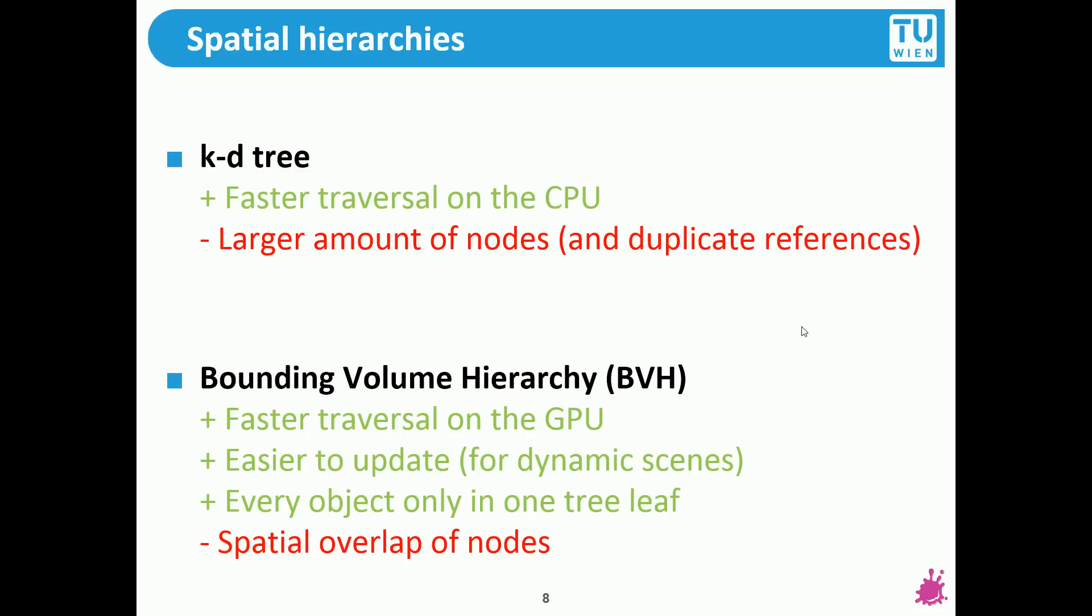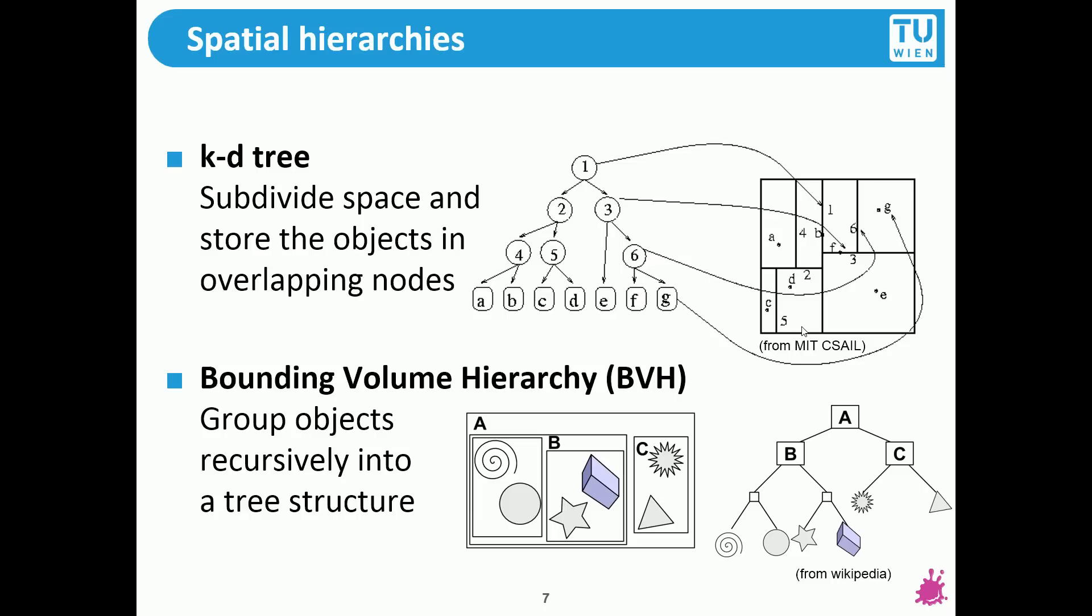They have advantages and disadvantages otherwise you would only take the better one. KD trees are usually faster for traversal on the CPU. Here I mean multi-core CPUs but they have usually a larger amount of nodes and they have duplicate references.